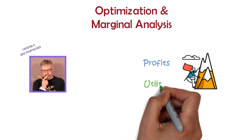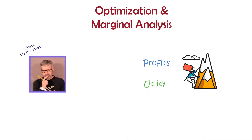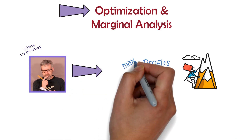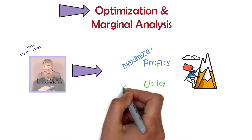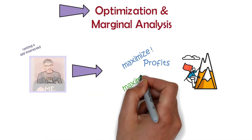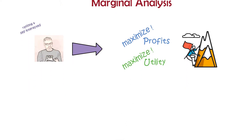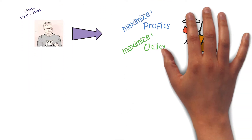But being rational and self-interested implies more than just desiring these objectives—it implies doing the best for yourself as you can. In other words, standard economic approaches emphasize optimization. How do firms maximize profits? How do individuals maximize utility? These are complicated because there are constraints.